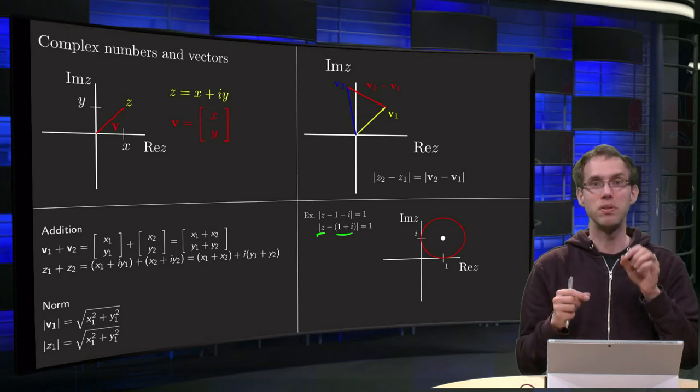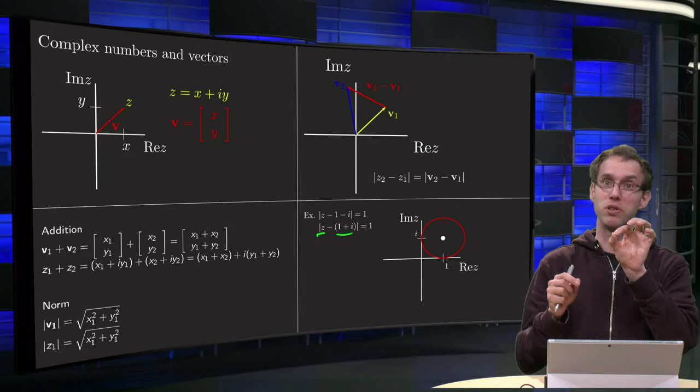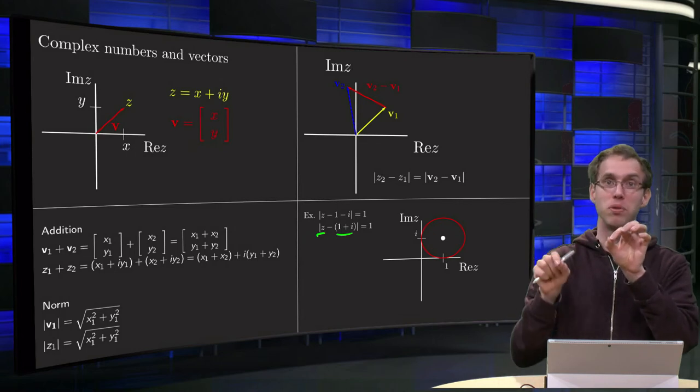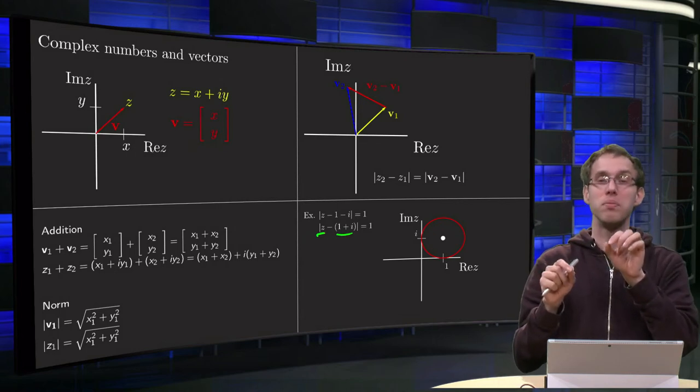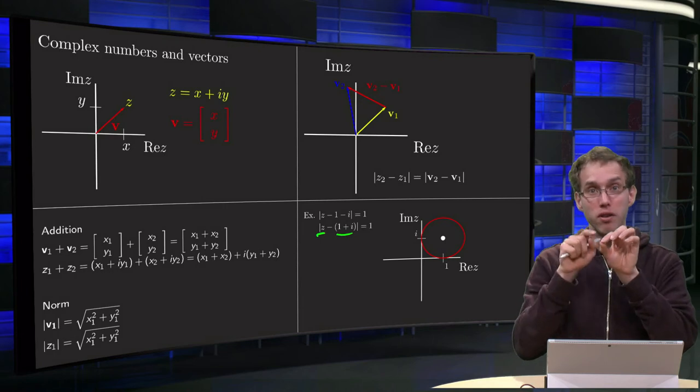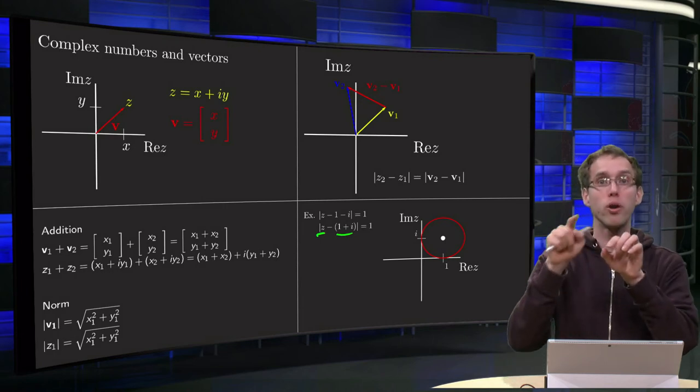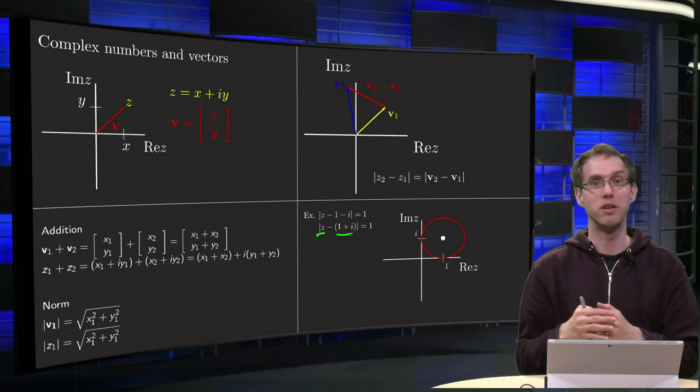That means that the distance between a fixed complex number 1 plus i and a variable complex number is always the same. But that means that the distance between a fixed point and all other points is the same. Well, you know what that means geometrically.